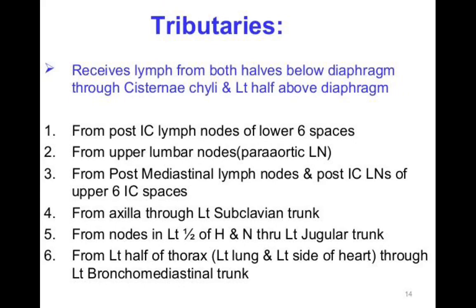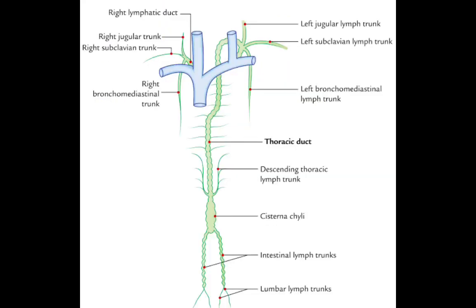The thoracic duct receives lymph from both halves below the diaphragm through the cisterna chyli, and the left half above the diaphragm. Specifically, it receives from the posterior intercostal lymph nodes of the lower six spaces, upper lumbar nodes, posterior mediastinal lymph nodes, posterior intercostal lymph nodes, the axilla through the left subclavian trunk, nodes of the left half of the head and neck through the left jugular trunk, and the left half of the thorax. Occasionally the left bronchomediastinal lymph trunk, draining the left lung and left side of the heart, also opens into the thoracic duct.